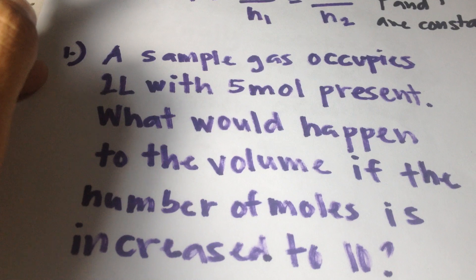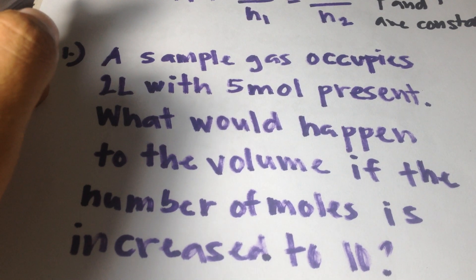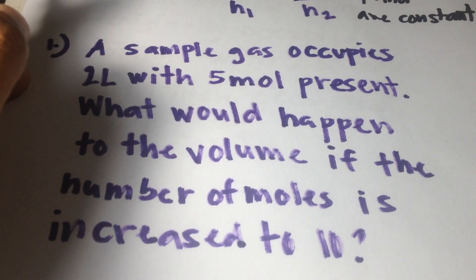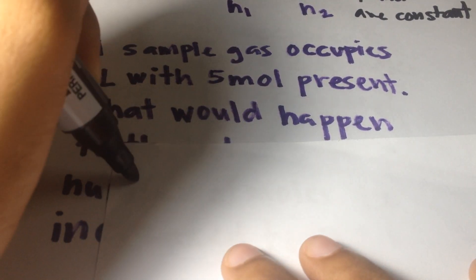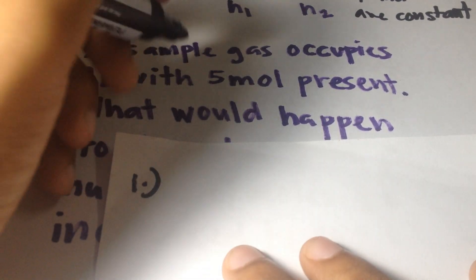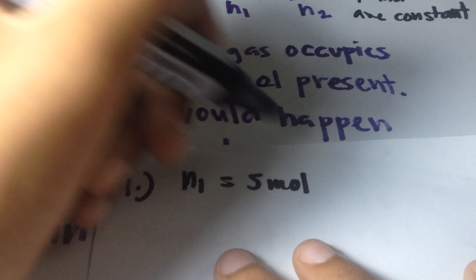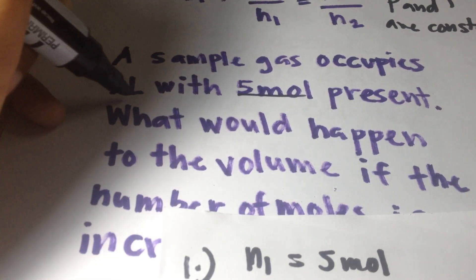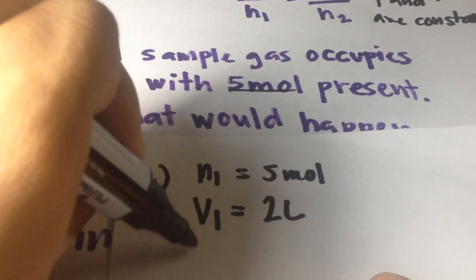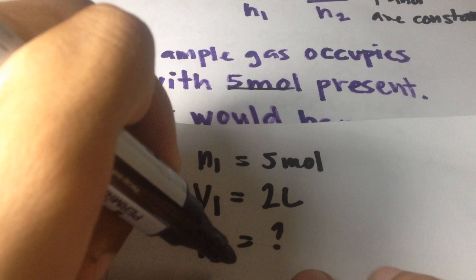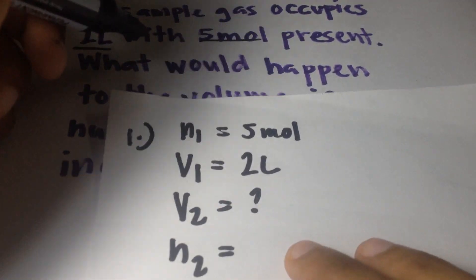Let's begin with problem number one. A sample of gas occupies 2 liters with 5 moles. What would happen to the volume if the number of moles is increased to 10? So, N1 equals 5 moles, V1 equals 2 liters. V2 is unknown, and N2 equals 10 moles.